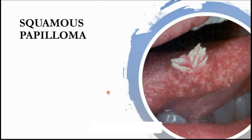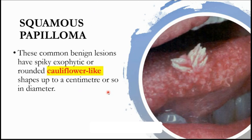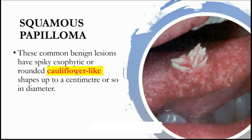Squamous papilloma — whenever we use the term papilloma, it has finger-like projections. Papillary projections are nothing but finger-like projections and they're also called exophytic growth. Exo means outwards — whenever something grows outwards it is called exophytic. Endophytic is like a burrowing kind of growth — it doesn't grow outward but causes burrowing in the tissue. Squamous papilloma is an exophytic benign lesion.